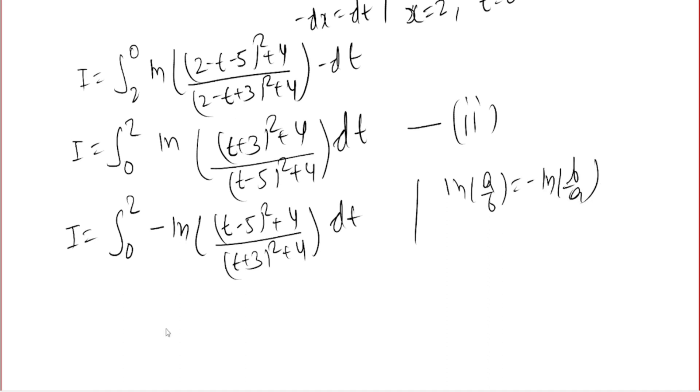If you look at this, it's -I. So I = -I, which means 2I = 0, so I = 0. This is the value of I.